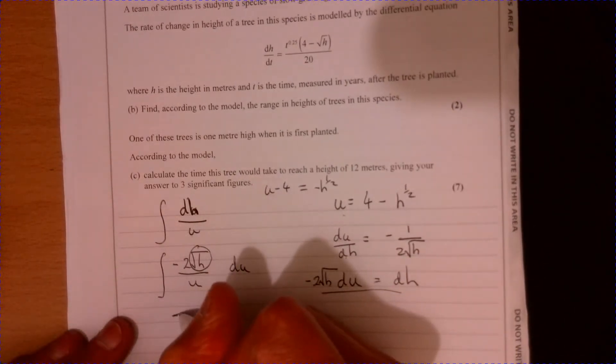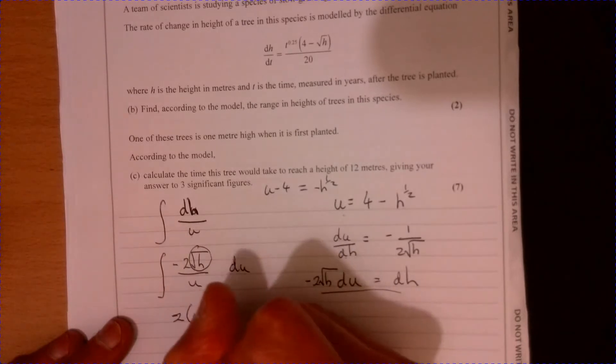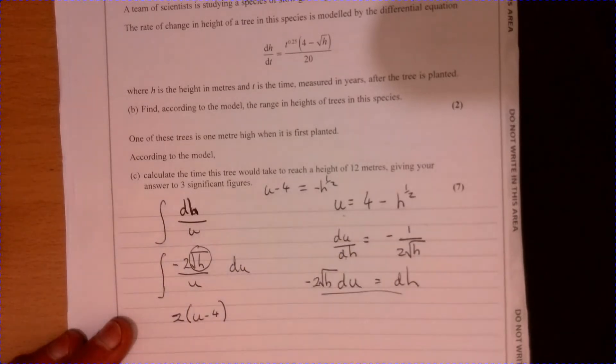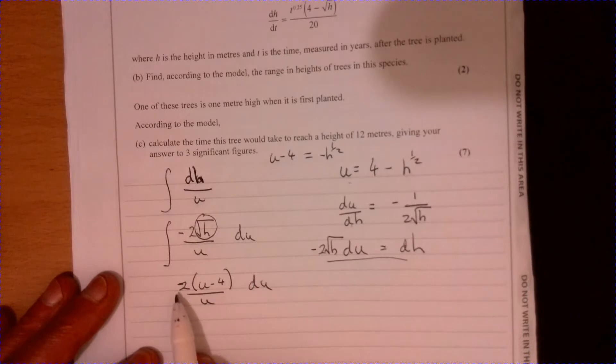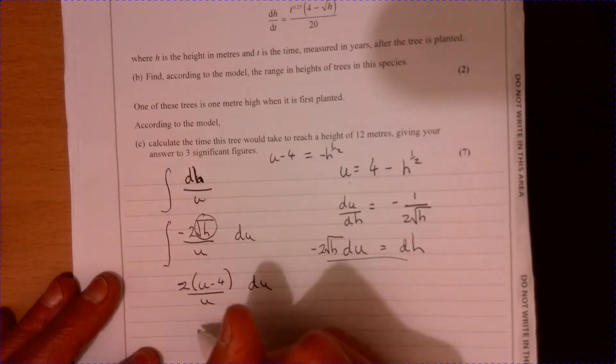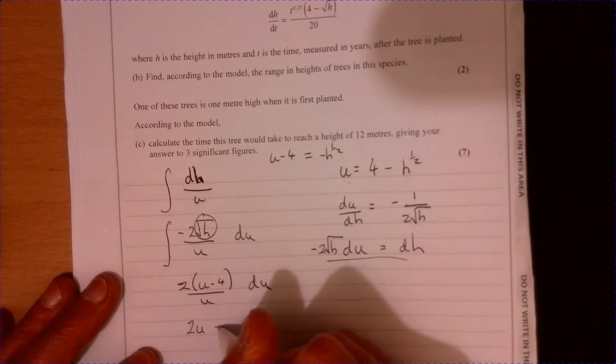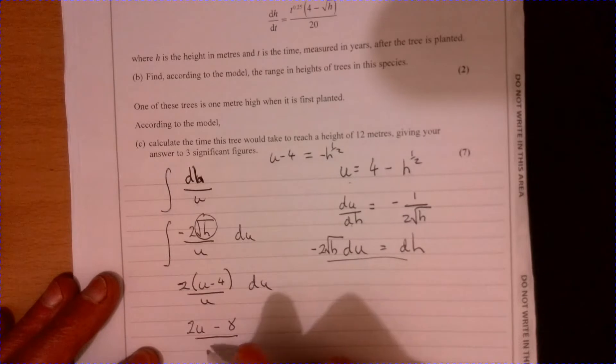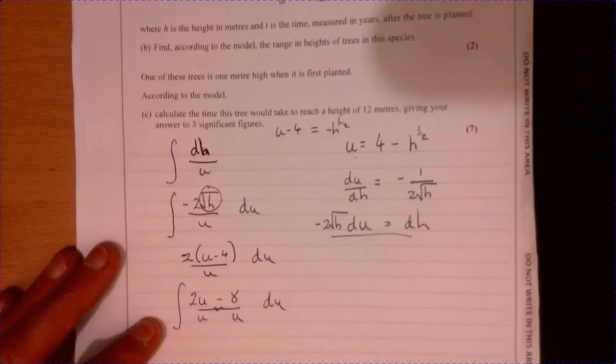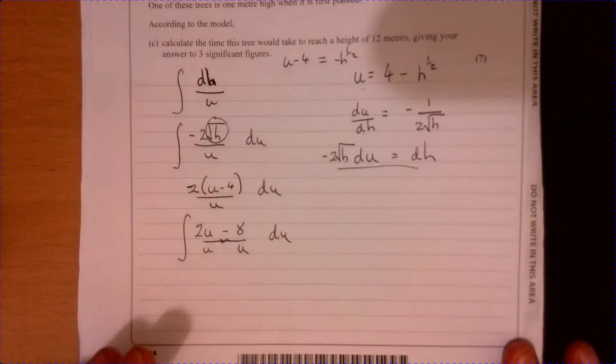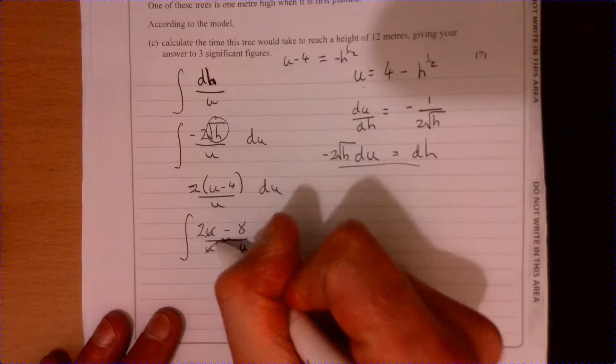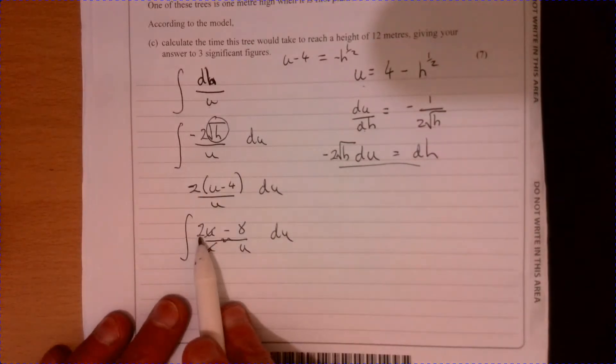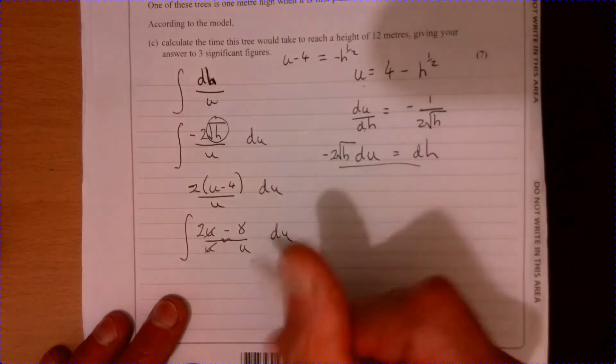I can just substitute this back in. If I now write so we can have 2 times u minus 4 over u du. Let's multiply this out see where we get to. We get 2u minus 8 over u but let's think about it individually and now we've got something that we can actually differentiate relatively easily.